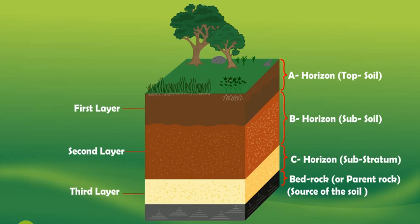The layer of soil which is just below the subsoil is called C horizon, also called substratum. Substratum is made up of small lumps of broken rocks or stones formed by the partial weathering of bedrock or parent rock. In other words, substratum consists of partially weathered rocks.